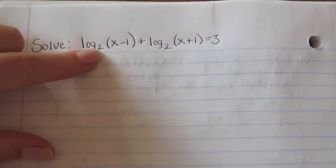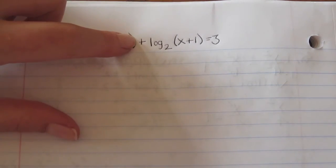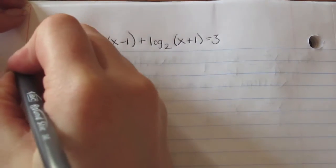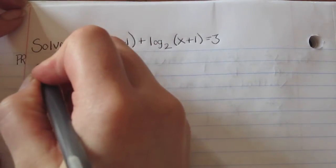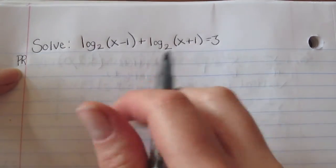Since both logs have base 2 and are being added, we can use the product rule which combines the two together with multiplication.